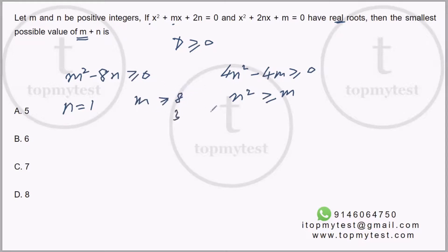So the smallest value possible will be 3. Now can I get 3 and 1? If I put 3 and 1, it will satisfy the first relation: 3² is 9, 9 - 8 is greater than 0.